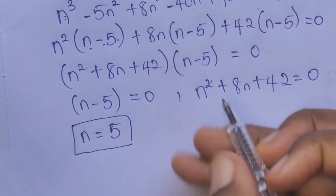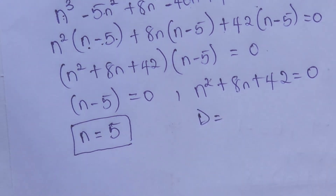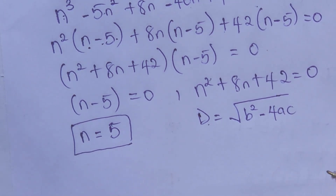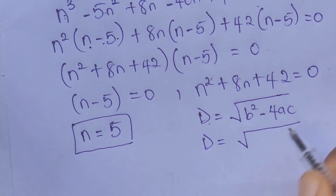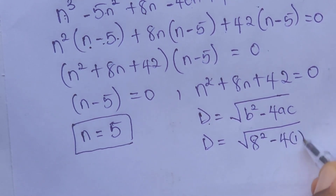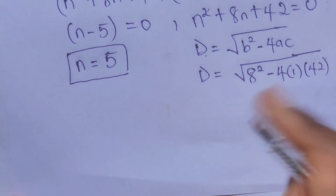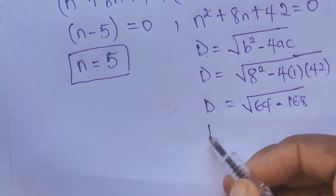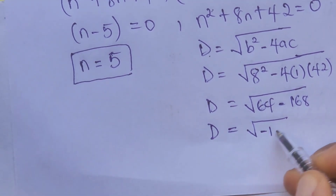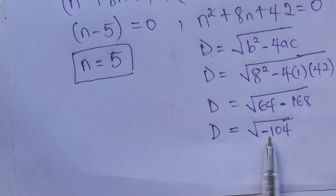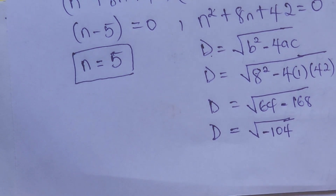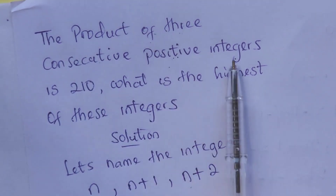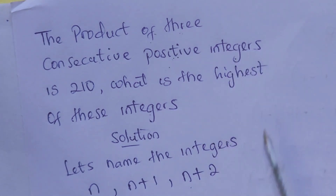Resolving the quadratic equation, let's determine the discriminant. We have d equal to the square root of b squared minus 4ac, which gives us the square root of 64 minus 168, equal to the square root of minus 104. Since the discriminant is the square root of a negative number, we get a complex number. Since the problem states three consecutive positive integers, we need an integer, not a complex number.